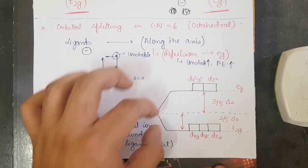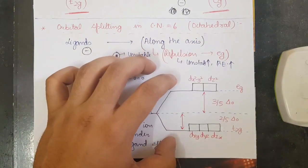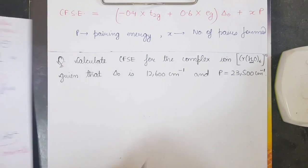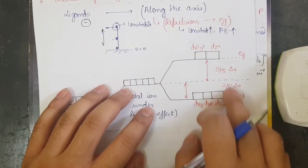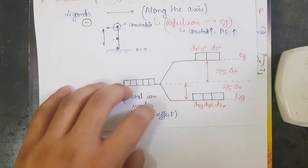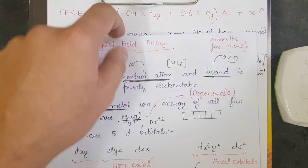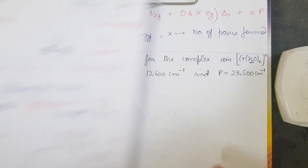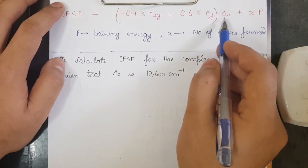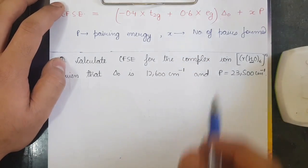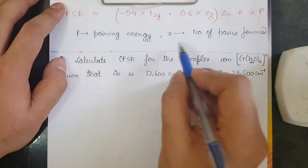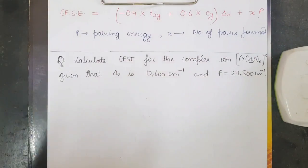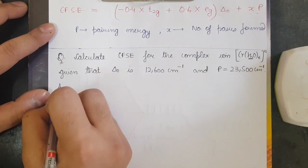So starting from the free metal ion, when ligands are introduced, the energy raises and then splits. The mathematical formula for CFSE is: CFSE = (−0.4 × t2g + 0.6 × eg) × Δ₀ + x × P. Here, −0.4 corresponds to going lower by 2/5, and +0.6 corresponds to going higher by 3/5. P is the pairing energy and x is the number of pairs formed.